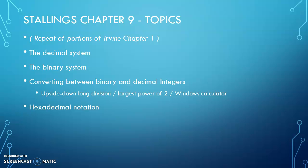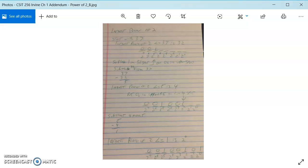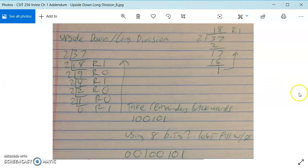In terms of what Stallings does for going from decimal to binary, he uses this upside-down long division method, which - whoops, wrong one - which is this method here, which we'll see later in terms of that depth of Chapter 9.